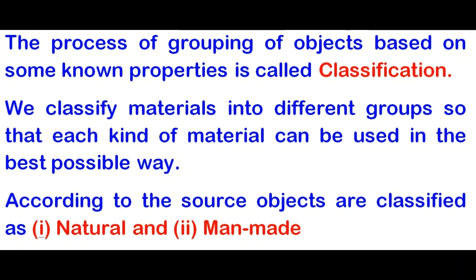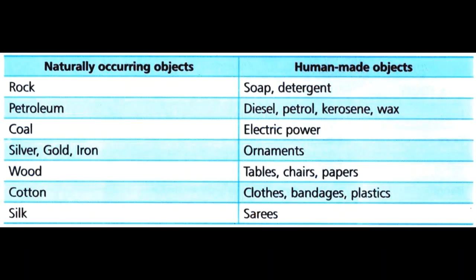Why do we classify? We classify materials into different groups so that each kind of material can be used in the best possible way — its utility increases. According to source, objects are classified as natural and man-made. Naturally occurring objects include rock, petroleum, coal, silver, and wood. Man-made objects include soap, detergent, powder, diesel, petrol, and ornaments.